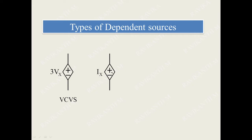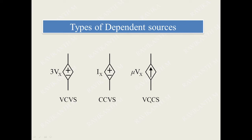Similarly, you can have Ix and a diamond box with a plus and minus symbol — it becomes a voltage source controlled by the variable Ix, so it is a current controlled voltage source, abbreviated as CCVS. Then you can see an arrow mark inside a diamond box, which becomes a current source multiplied with variable Vx and amplitude mu — this is a voltage controlled current source. Finally, another diamond box with an arrow mark becomes a current controlled current source.